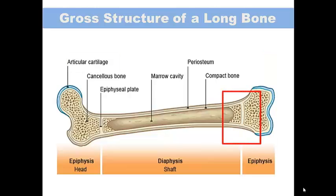The metaphysis contains a thin plate of cartilage called the epiphyseal plate. This is responsible for the lengthwise growth of the long bones, meaning increasing the length of the bones.